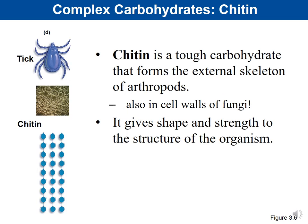Chitin is a tough carbohydrate that forms the external skeleton of arthropods and is also found in the cell walls of fungi. Like cellulose, our cells cannot digest chitin, but it gives shape and strength to the organism's structure.